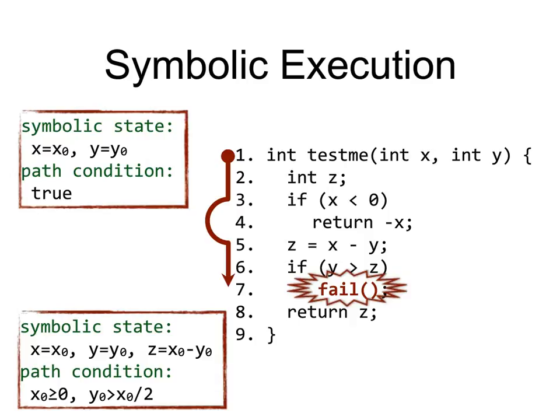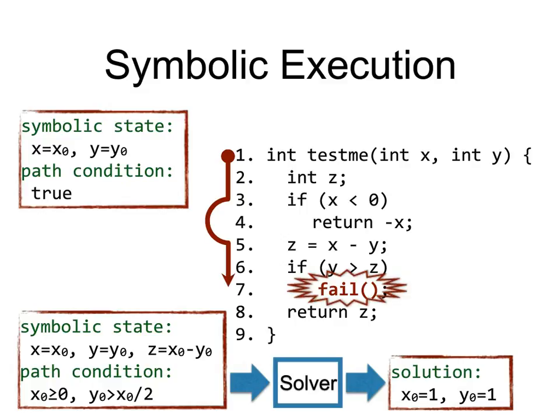To reach the failing point, we follow the path from line 1 to 3, skip line 4, and enter the if-branch at line 6. Tracking symbolic state and path condition along this path, by the time we reach the fail statement: X and Y are unchanged (X0 and Y0), Z equals X0 minus Y0 from line 5, and the path condition is X0 ≥ 0 and Y0 > X0/2. We then pass this path condition to a solver, which produces a solution such as X0=1 and Y0=1, automatically generating input that will reach the specific failing point.